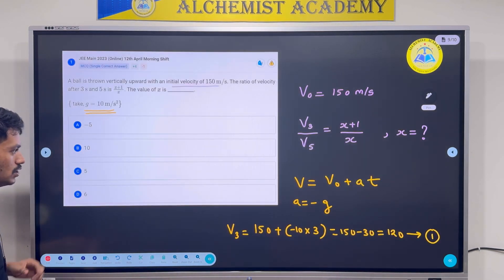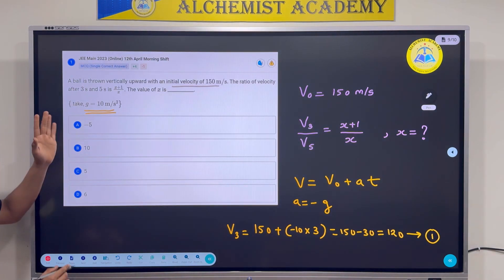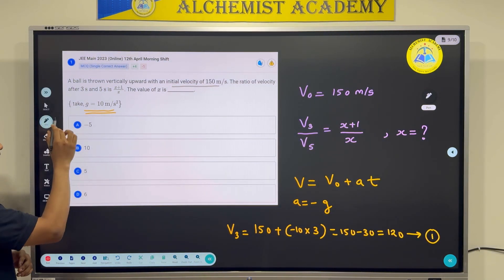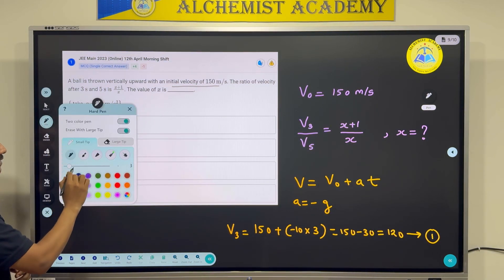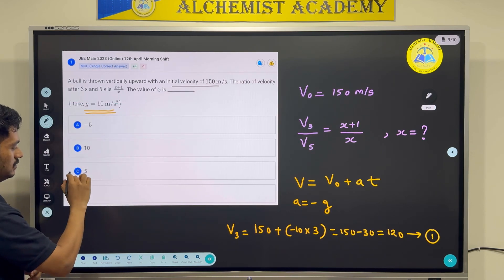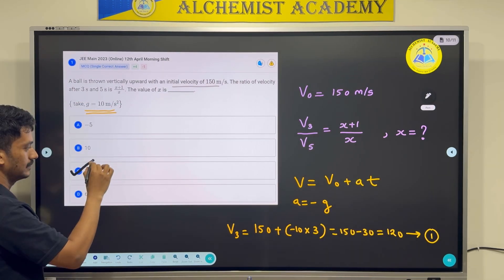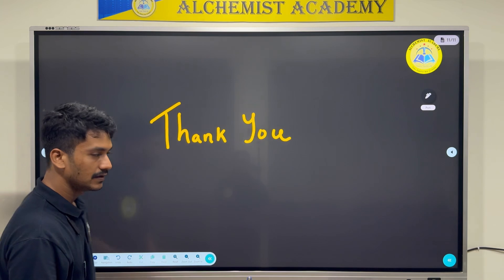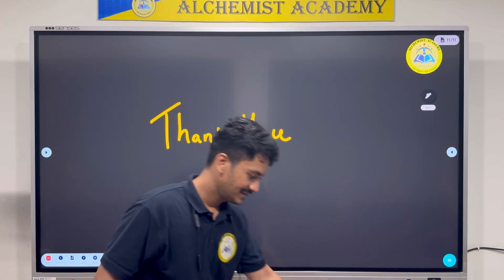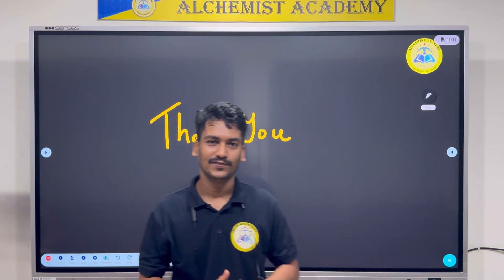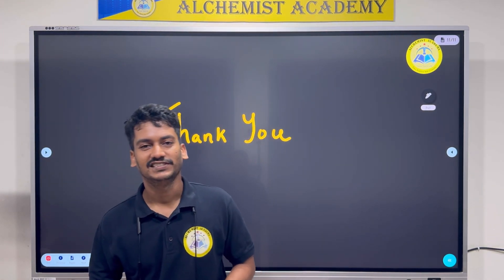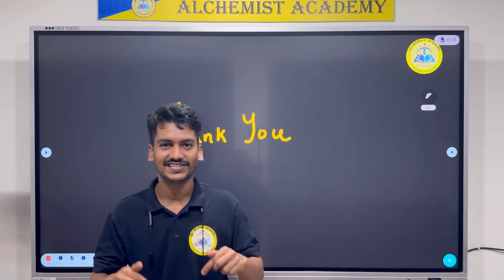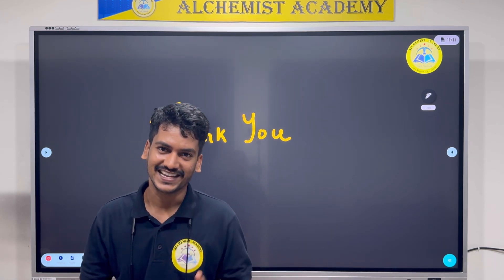Going back to the options, x = 5 is present — that's option C. That's all for today's session. Comment down how you found it, and see you in the next one.